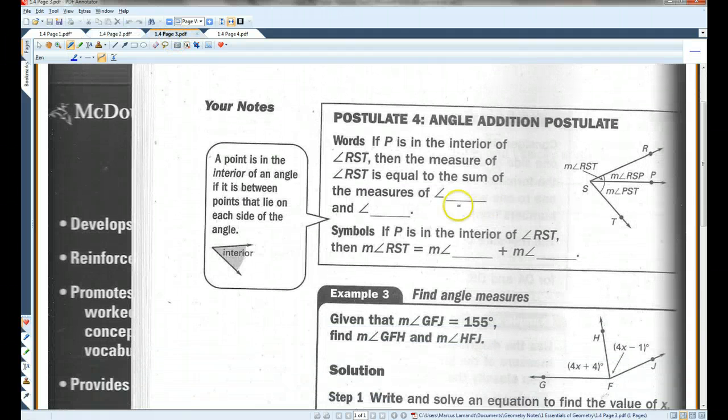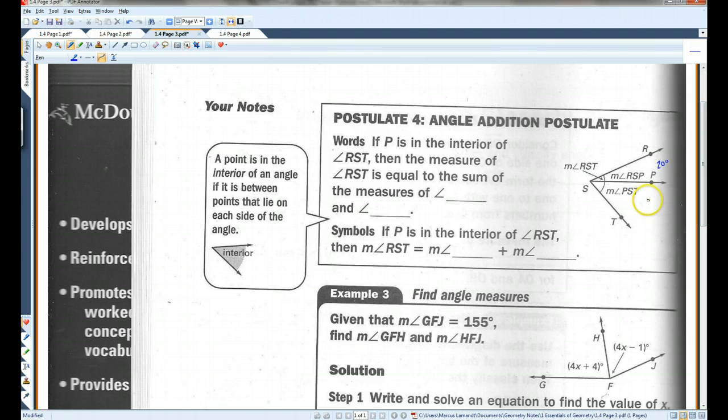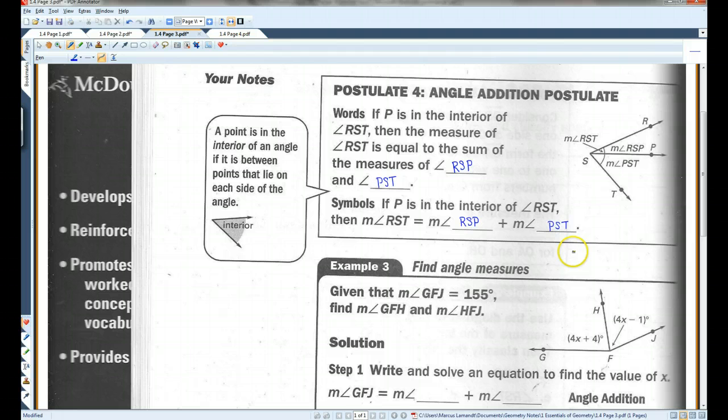Okay, postulate four, angle addition postulate. If P is in the interior of angle RST, then the measure of RST is equal to the sum of the measures RSP and PST. Alright, so basically, if you have, if this angle here is, I don't know, 20 degrees, and this over here is 60 degrees, then the whole thing would be 80. You could just add these two angles together to get the big angle.